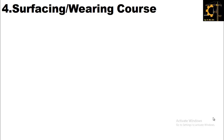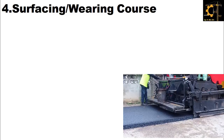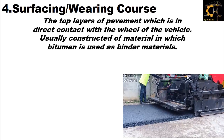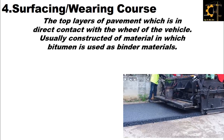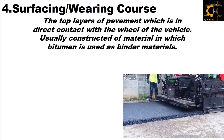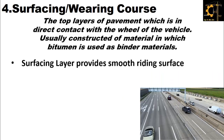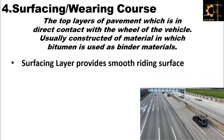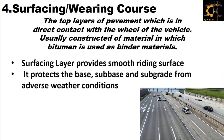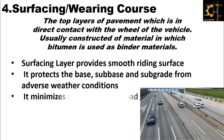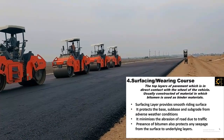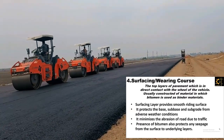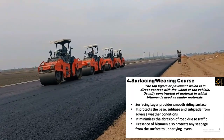The fourth structural component of the road is surfacing, or wearing course. It is the top layer of pavement in direct contact with the vehicle, usually constructed of material in which bitumen is used as a binder. The surfacing layer provides a smooth riding surface. It protects the base, subbase, and subgrade from adverse weather conditions. It minimizes the abrasion of the road due to traffic. The presence of bitumen also protects against seepage from the surface to the underlying layers.